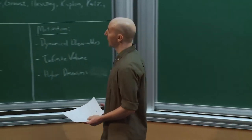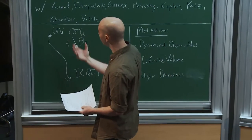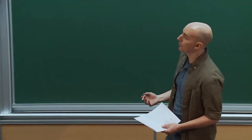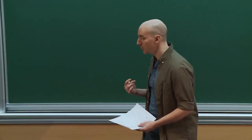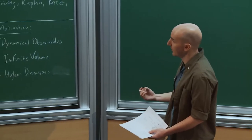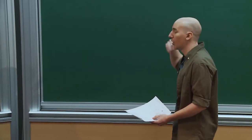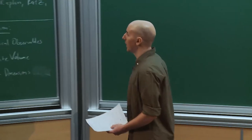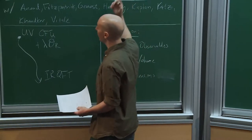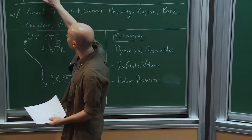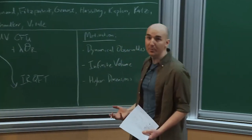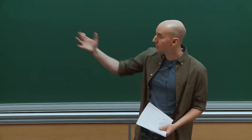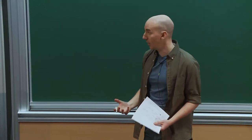Working backwards from the title: we're going to tackle this problem via Hamiltonian truncation, very much akin to the spirit of the truncated conformal space approach. We're going to use the conformal structure of the starting UV theory to organize our truncation basis, but with a slightly different choice — we'll work in light cone quantization. The goal is to use this truncation framework to study the full RG flow, from the UV CFT down to the IR.